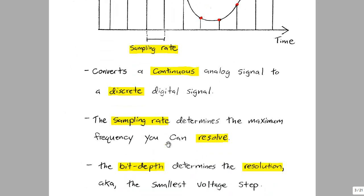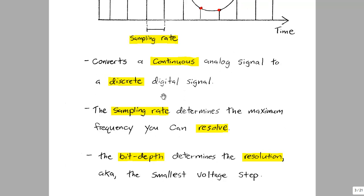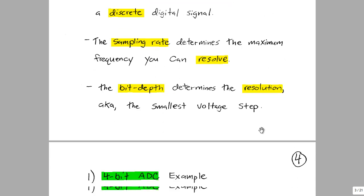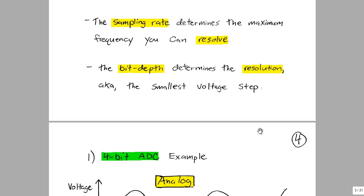So again, this analog to digital converter will convert a continuous analog signal into a discrete digital signal. The sample rate determines the maximum frequency you can resolve, and bit depth determines resolution. So if you want a more accurate voltage, you basically have to have a higher bit depth, say 16-bit, or 24-bit, or even 32-bit in some examples.